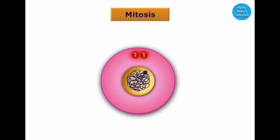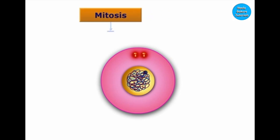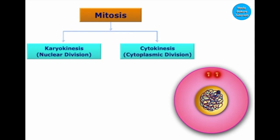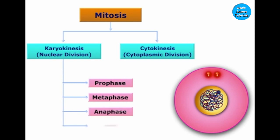During S phase, the DNA content is doubled. Mitosis is completed in two steps: karyokinesis, that is nuclear division, followed by cytokinesis, that is the division of the cytoplasm. Karyokinesis is completed in four phases: prophase, metaphase, anaphase, and telophase.